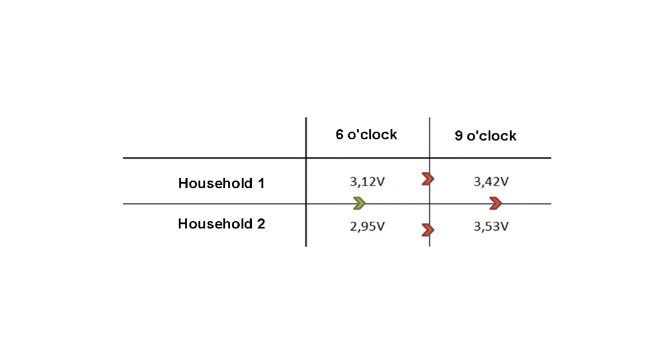When comparing the measured values, we note that both voltages are increased and that the voltage at the second household is now higher than at the first. Therefore, between 6 and 9 o'clock, the voltage and the direction of current flow between the two houses have reversed.